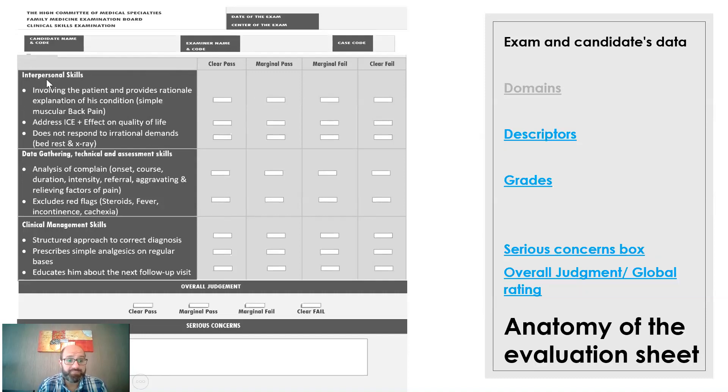So what does it contain? It contains domains of performance, descriptors under each domain, grades, overall judgment box, and serious concerns box. We will come to each one of those and explain how to write it and why it is important.